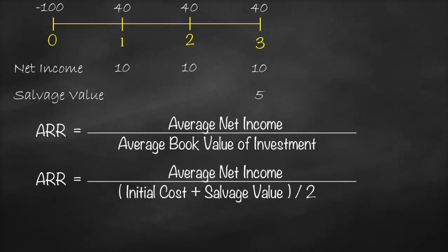Let's calculate our ARR in this example. Our average net income is 10 plus 10 plus 10, all divided by 3. If we have the same number it will give you 10. Divided by our initial investment, which is 100 without the negative, plus our salvage value equal to 5, all divided by 2. Remember, if salvage value is 0 you still need to get the average, so you'll say 100 plus 0 divided by 2. In our example we have a salvage value of 5, so we got 100 plus 5 divided by 2.